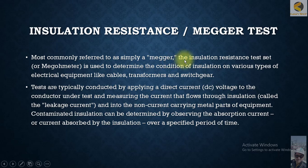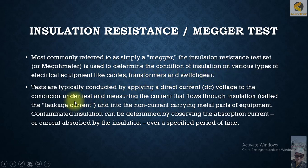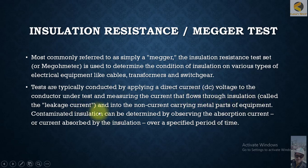Mega testing — most commonly referred to simply as mega testing — uses an insulation resistance tester or megohmmeter to determine the condition of insulation on various types of electrical equipment like cables, transformers, switchgear, etc. Tests are typically conducted by applying a direct current (DC) voltage to the conductor under test and measuring the current that flows through the insulation, called the leakage current.